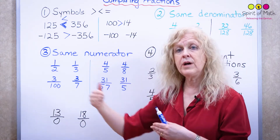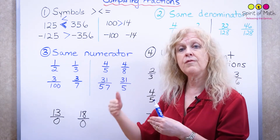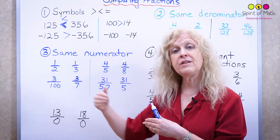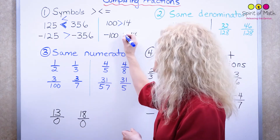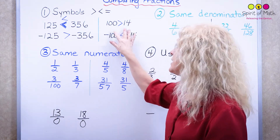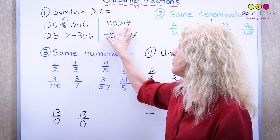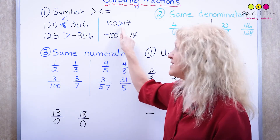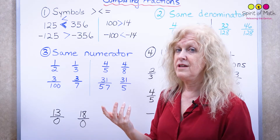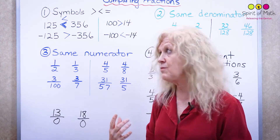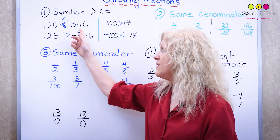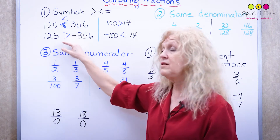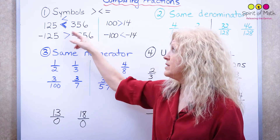Let's look at negative 100 and negative 14. Negative 100 is furthest to the left, so it is the smaller number. Notice: with 114, I have 14 less than 100. But with negative 100 and negative 14, the symbol switches around. That's important to remember for fractions too. 125 is less than 356, but negative 125 is greater than negative 356 — the symbols switched.